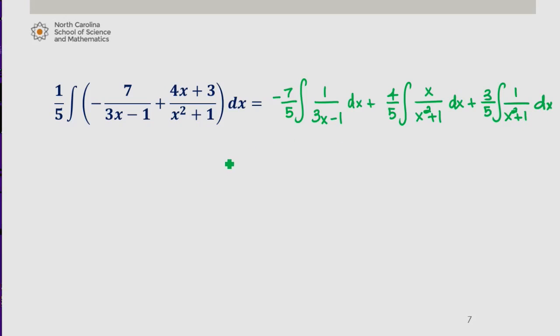And now we can evaluate. Negative 7 fifths times 1 third, times the natural log of absolute value of 3x minus 1, plus 2 fifths times the natural log of absolute value of x squared plus 1. You may want to verify this one using u substitution, plus 3 fifths times inverse tangent of x plus our constant C.